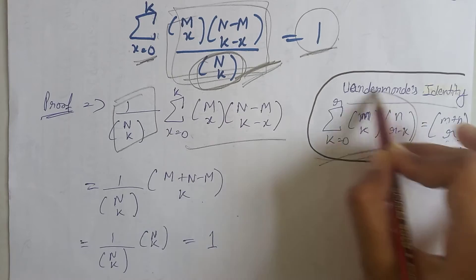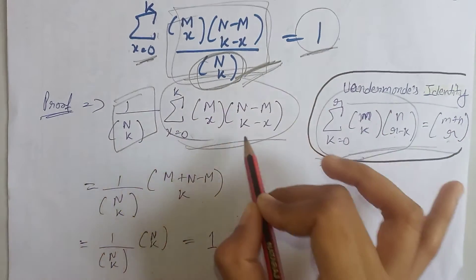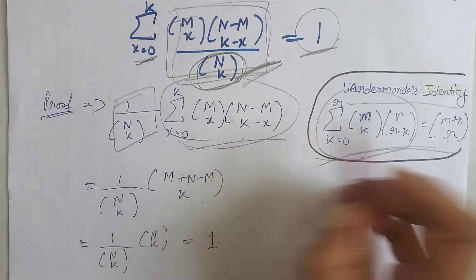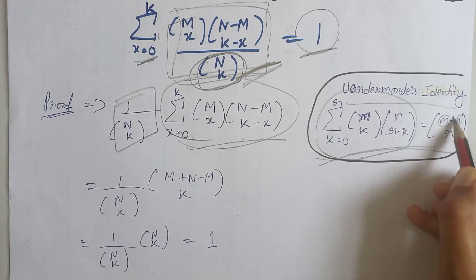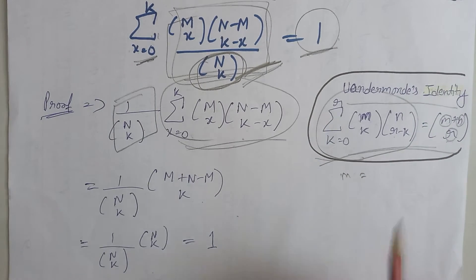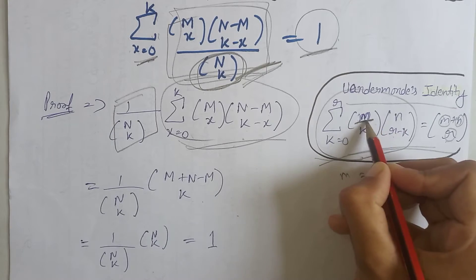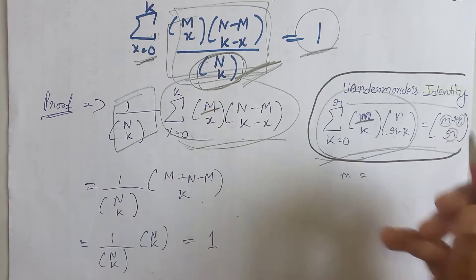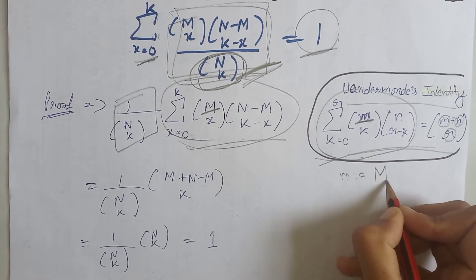So we will apply this identity here. That means we just have to find out the value of small m, small n, and small r. Now we can see here that at the place of small m here we have capital M, that is, the value of small m is equal to capital M.